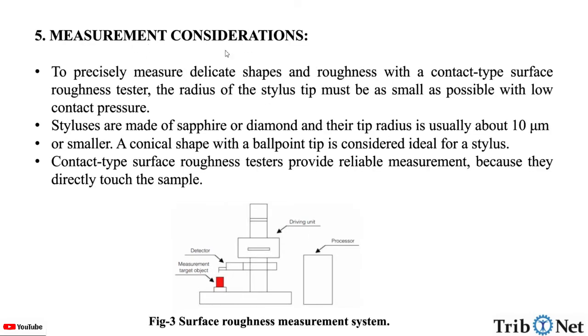What are the measurement considerations in the stylus instrument? To precisely measure delicate shapes and roughness with a contact type surface roughness tester, the radius of the stylus tip must be as small as possible with low contact pressure.